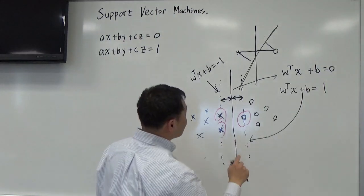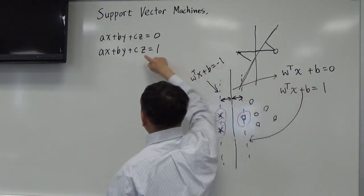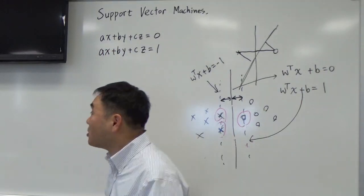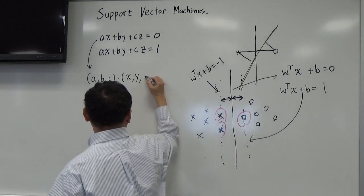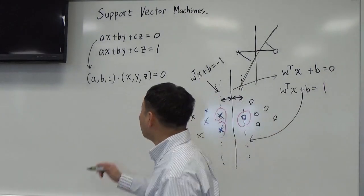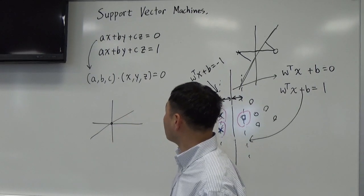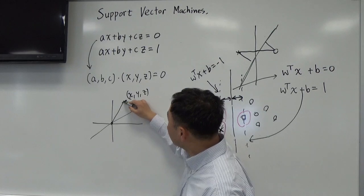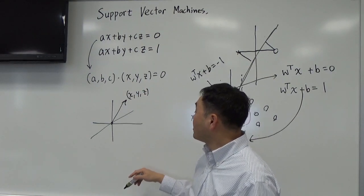Now let's think about the requirement that we want this plane to be as far away from the points as possible. In other words, I want the distance between these two parallel planes to be as large as possible. Remember that the dot product of two vectors being zero means they're orthogonal — perpendicular. The origin 0,0,0 is definitely on the zero-plane, and if you take another point x,y,z and think of a,b,c as a vector, these two have to be orthogonal.